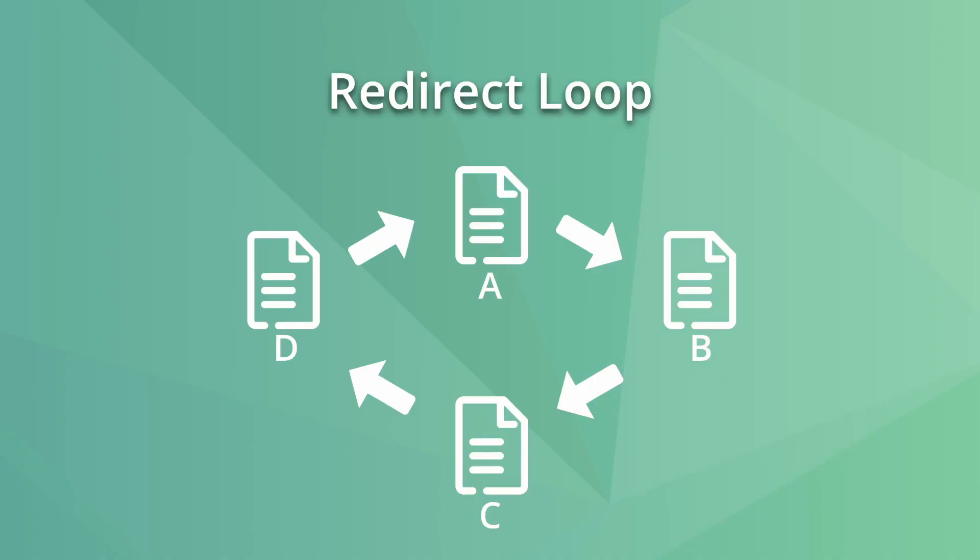The first and most common is redirect loops. A redirect loop happens when you redirect several pages in a chain and the final page is redirected back to the original URL, creating a full circle. This can also happen when a page is accidentally redirected to itself. Redirect loops make pages unavailable and will confuse Google crawlers.